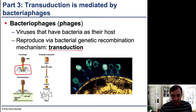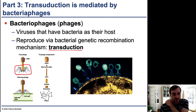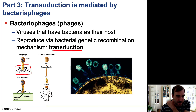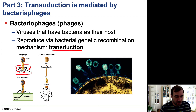First we need to cover some basics about viruses. Viruses actually come in many different sizes and shapes. This is an example of one of the phages that is able to infect E. coli, and it has this characteristic face-hugger shape from Aliens, with legs that are used to attach to and recognize its bacterial host.